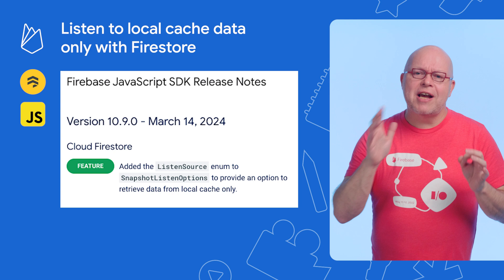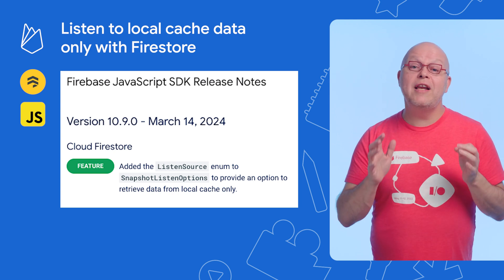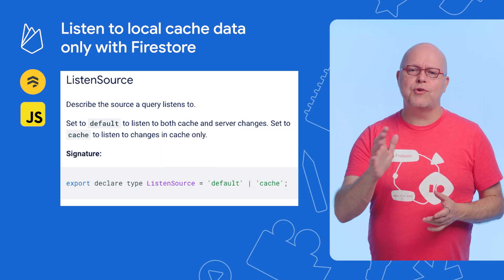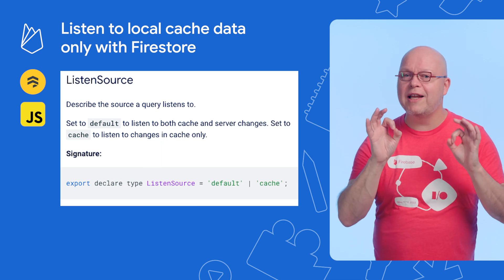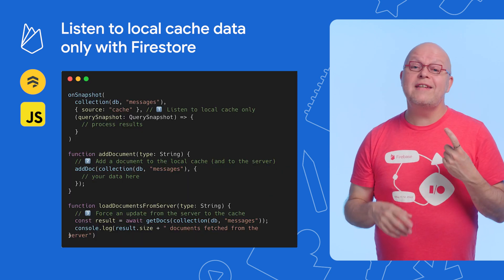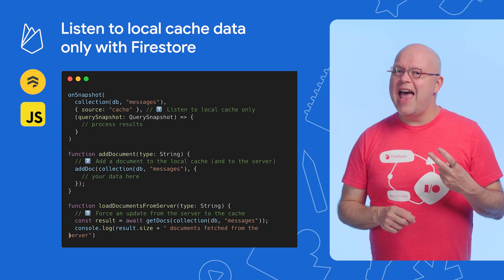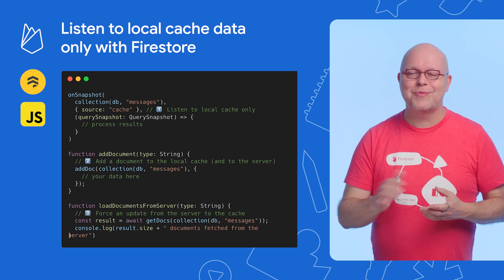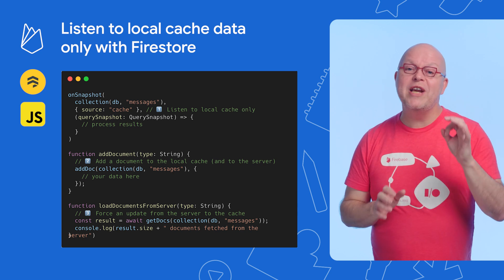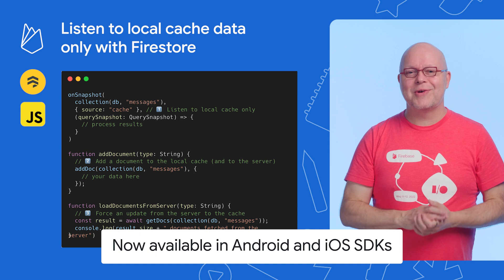When you use our JavaScript SDK to access Firestore data in your web apps, you can now choose to only listen to data in the local cache. This new type of listener will not connect to the database server to get documents or updates — it will only listen for data in the local cache. A cache-only listener will detect all local cache updates, like those that happen when you add a document on the local client and when you trigger an update from the server elsewhere in your code. For many projects, a large portion of their Firestore cost comes from reading documents from the server, so this is a great new tool to control those costs.